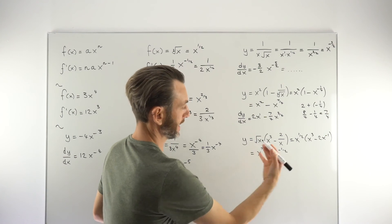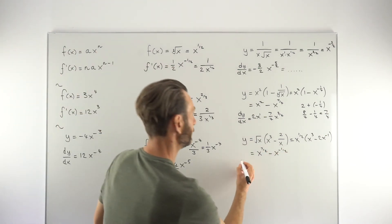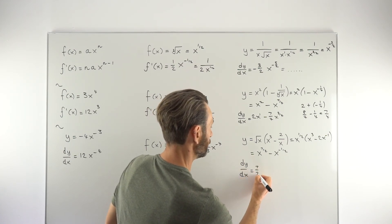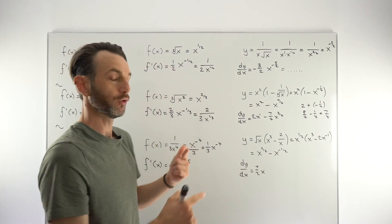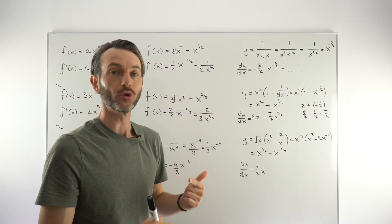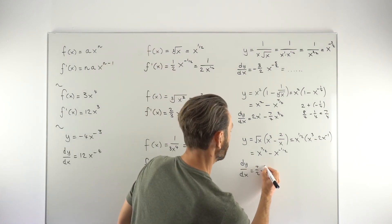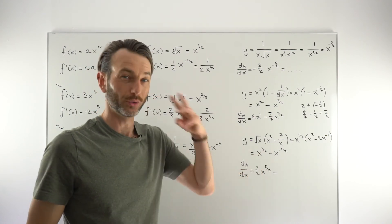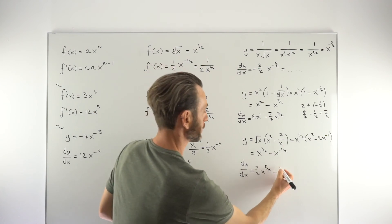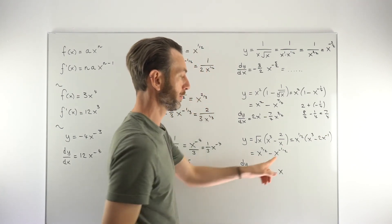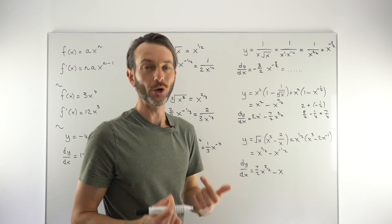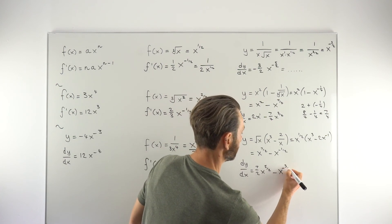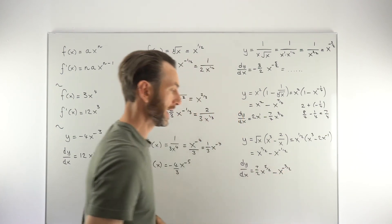Then minus X: one-half minus one equals minus one-half. This is now in a differentiable form after three moves. Both terms are in AX to the N format, so we write DY/DX: seven over two X to the power of seven over two minus two over two equals five over two. The second term: taking one off of minus one-half gives minus three over two. We can then rewrite that with a positive power.